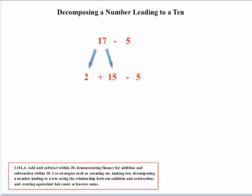Taking a second example of this strategy: 17 subtract 5. We know that 15 minus 5 is 10, so that involves breaking the 17 down to 2 plus 15 to get a 10. In this case, we have 2 plus 10 is 12, which is the correct solution for 17 minus 5.